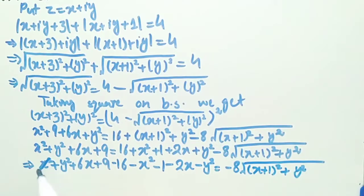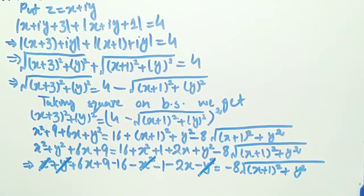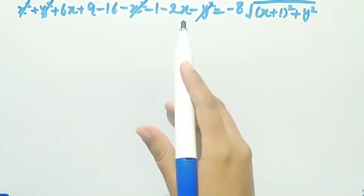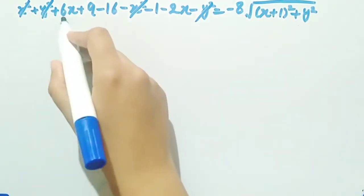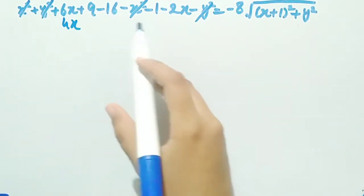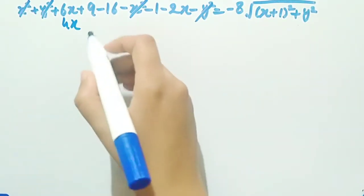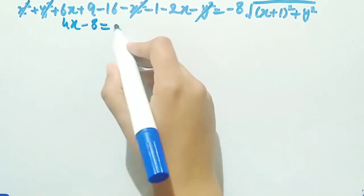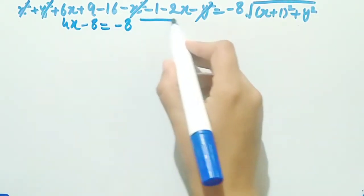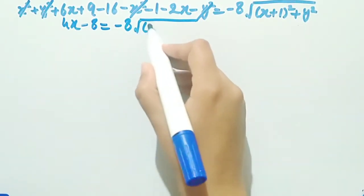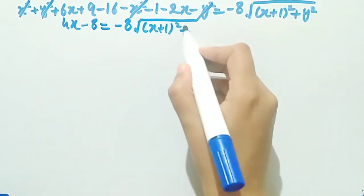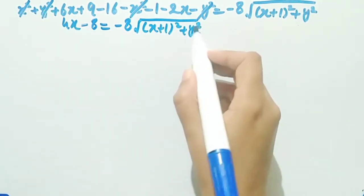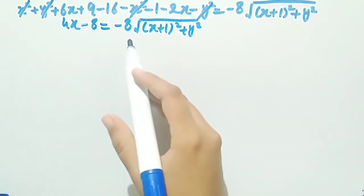The x square cancels with minus x square, and y square cancels with minus y square. So 6x minus 2x equals 4x, and 9 minus 16 minus 1 equals minus 8, giving us 4x minus 8 equal to minus 8 times square root of (x plus 1) square plus y square.